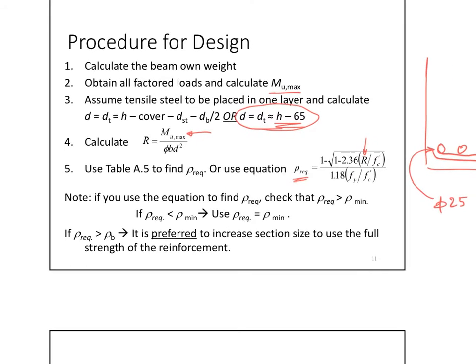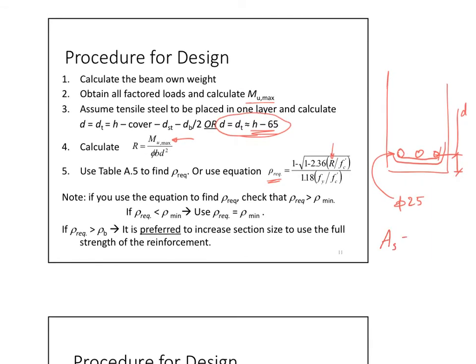Now I know what my area steel will be. So my area steel will be my rho required. This is the area steel required. Will be my rho required times D times B. Okay? Now I got my area steel. We have to make sure that before we proceed, we have to make sure that the rho required that I obtained is bigger than rho minimum. Because you might have really small moment that you end up with a rho that is less than rho minimum. And in this case, you cannot take it. You will have to use rho minimum.